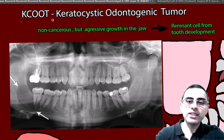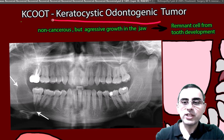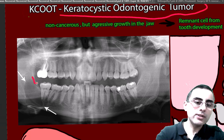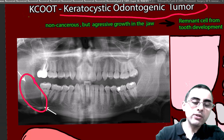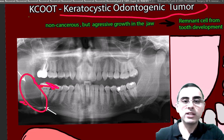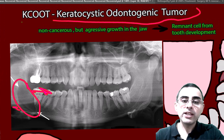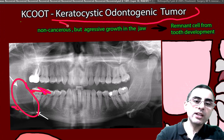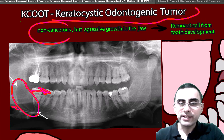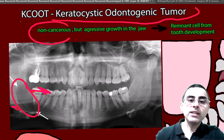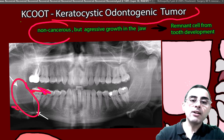We will talk about keratocystic odontogenic tumor. It's important because it can grow large and it can cause displacement of teeth or destruction of jaw bone — that's why it's important. It has an aggressive nature, but it's not cancerous, not malignant, meaning it does not give metastasis, but it does have aggressive growth.